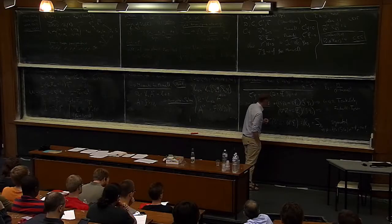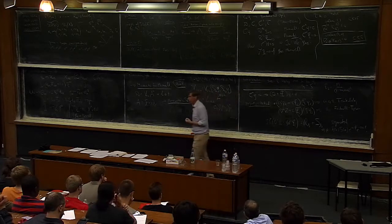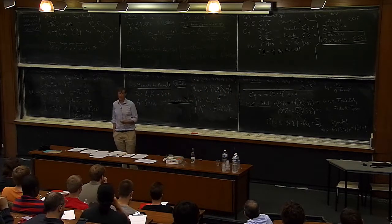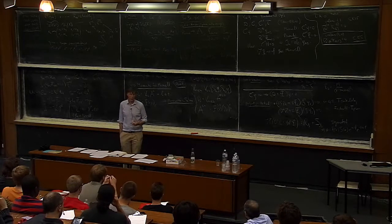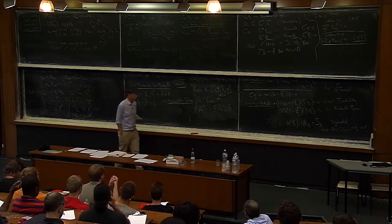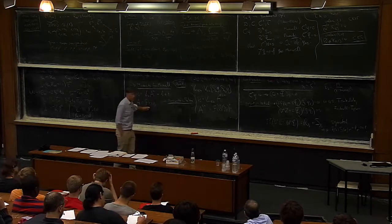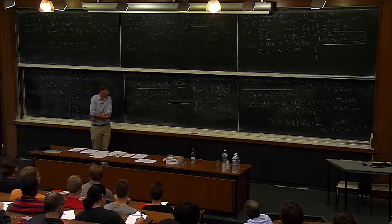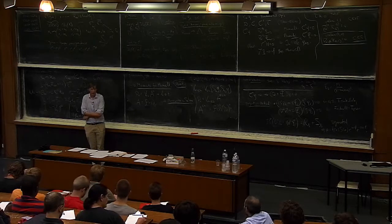So far as we can understand at the moment, the Teukolsky system on its own is very difficult to study. But actually the Teukolsky system is derived from the Maxwell system by taking one more derivative. So if we actually go back and use the full information from the Maxwell system, we have more conserved quantities than you would have for the Teukolsky system alone. That's what we're working on at the moment.